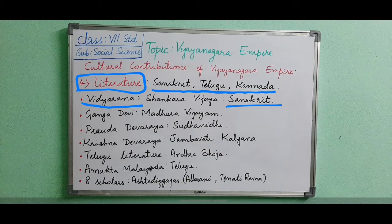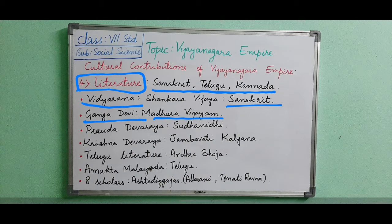Kings and their family members also produced significant literature. Among them, Ganga Devi wrote Madhur Vijayam. Even kings composed books — famous among them is Ganga Devi. Another king from the Sangama dynasty, Parudadeva Raya, wrote a drama called Sudhanidi. The greatest king of Vijayanagara also wrote a book called Jambavati Kalyana.